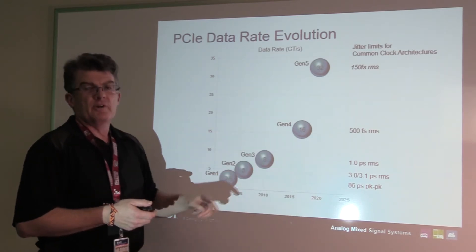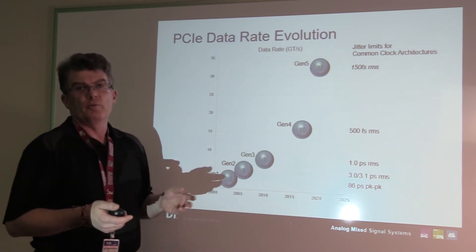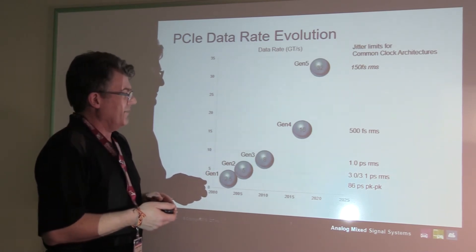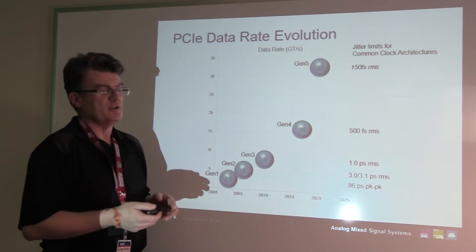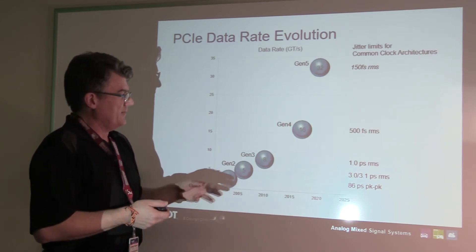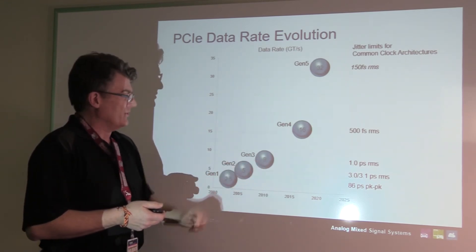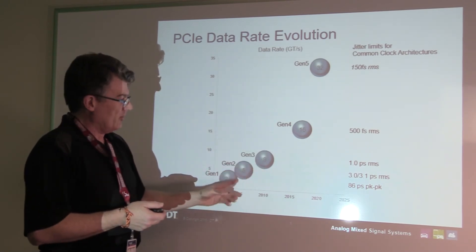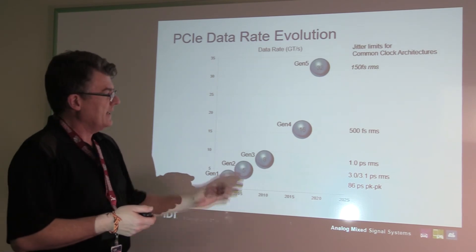With Gen 3, they went to a polynomial approach to error correction and a much longer coding structure to get an actual 8 gigabit data rate for Gen 3. So in reality, the data throughput did double from 5 gig at Gen 2 to 8 gig at Gen 3.